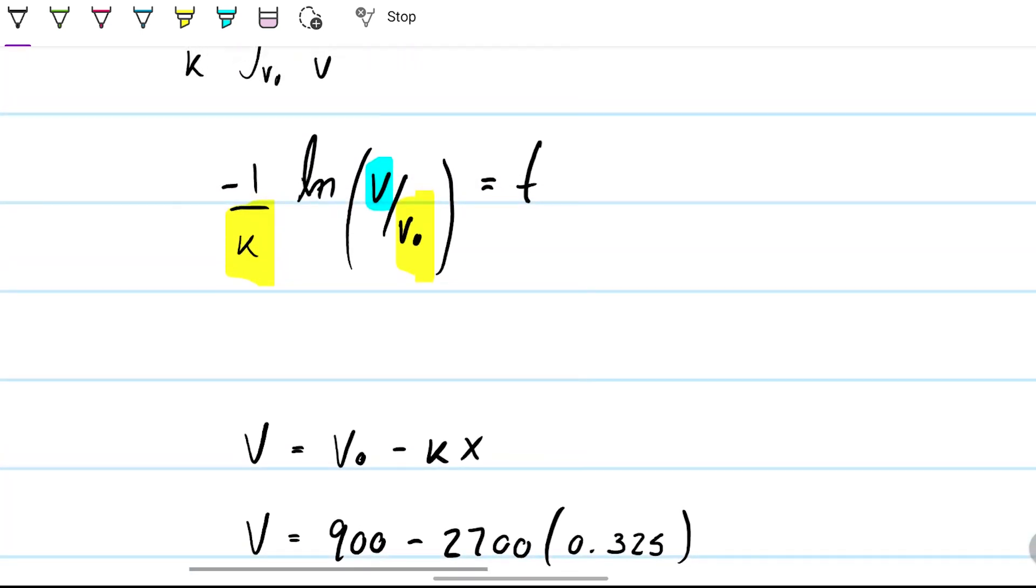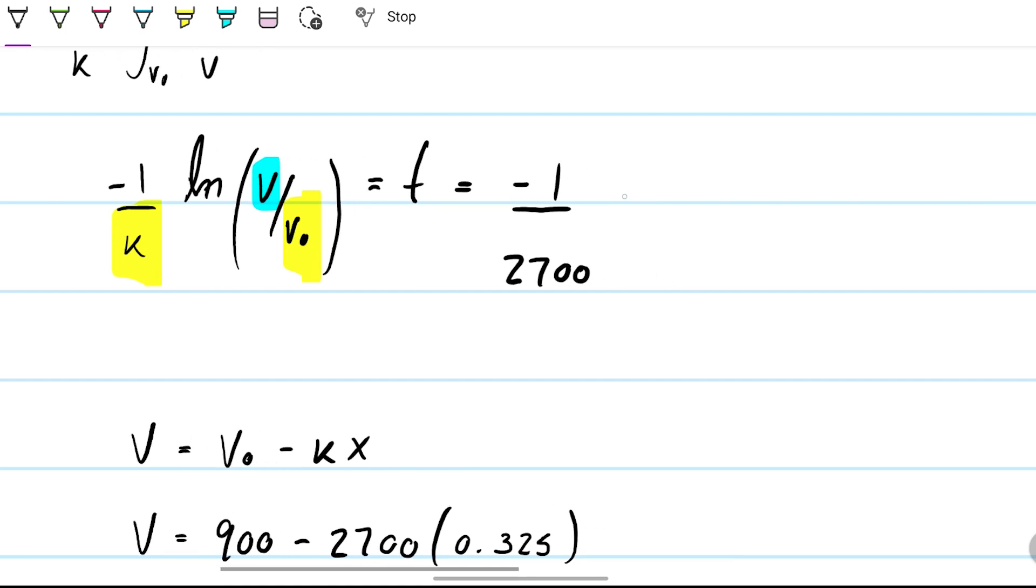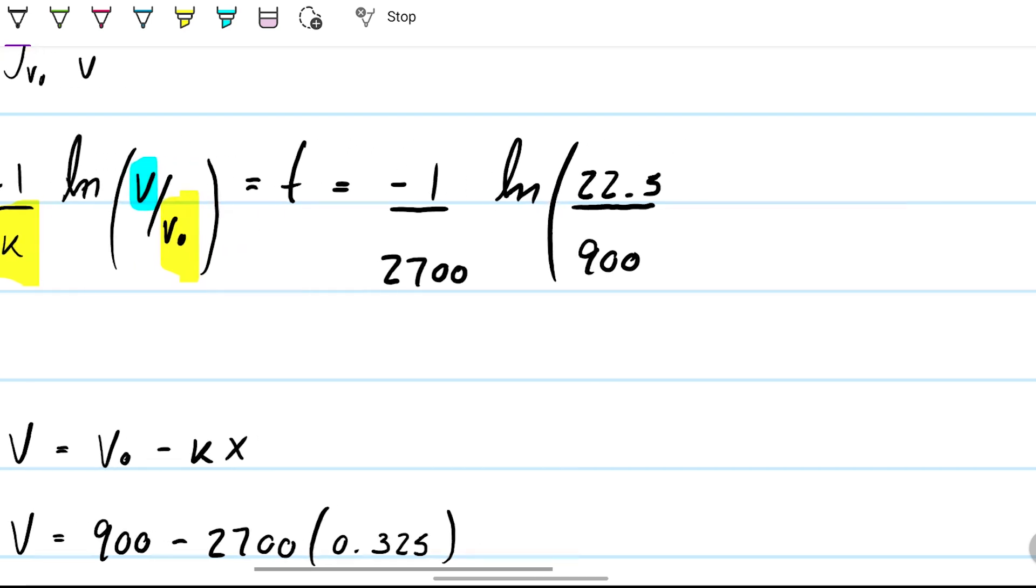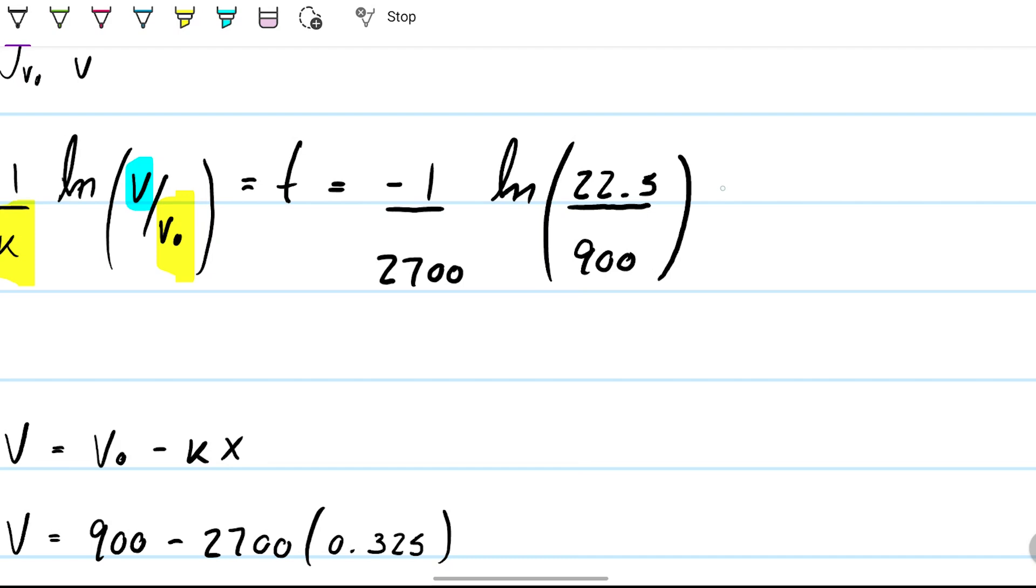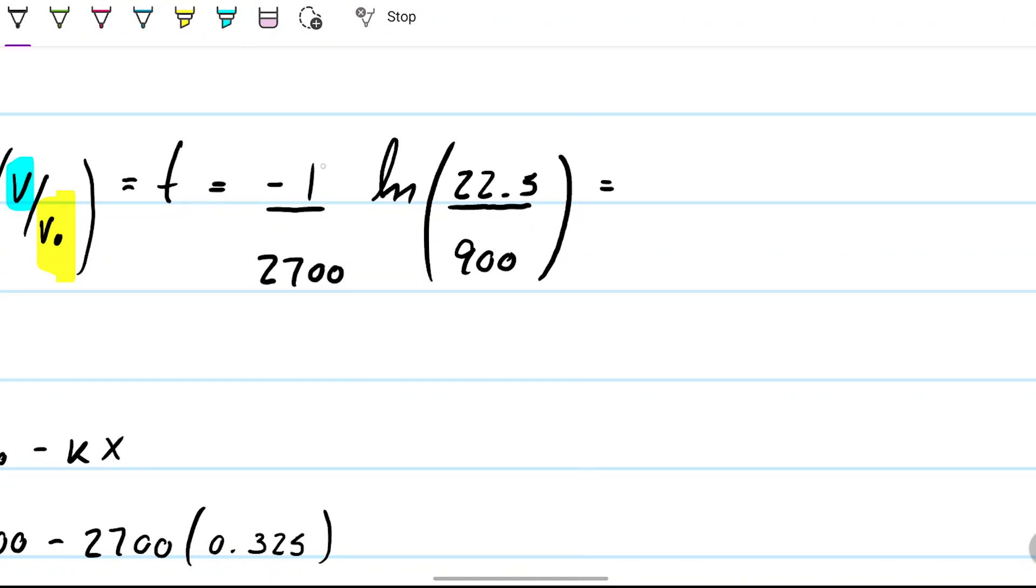So with this piece of information, this becomes trivial. What is the time? Well, the time is going to be -1/2700 times the natural log of 22.5 divided by 900. This is going to output a negative number, so negative times negative is going to give me a positive number, which is great. Unit-wise, there's no unit coming out of this - the units cancel out here - but this was one over seconds.